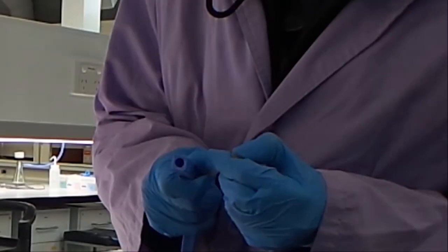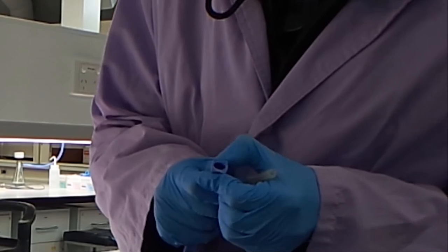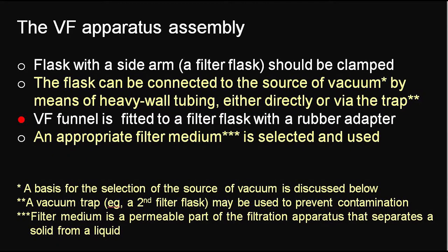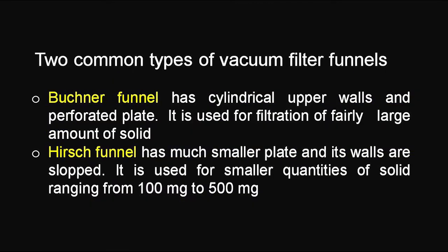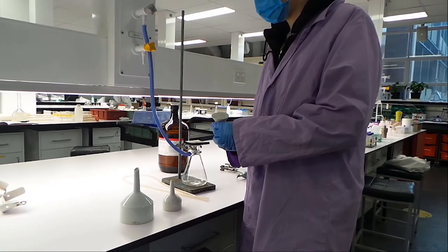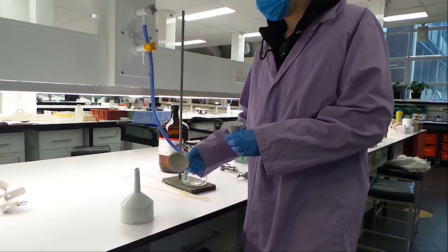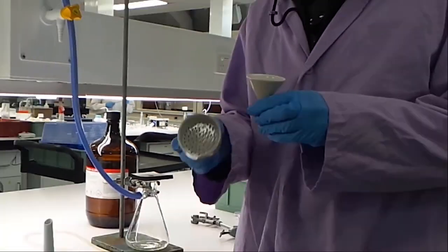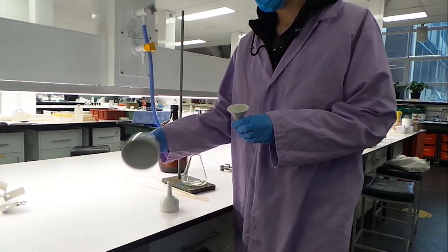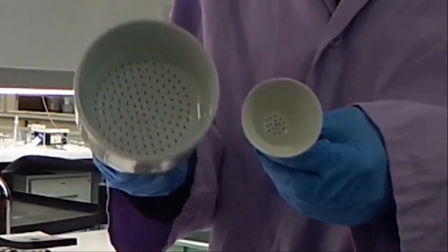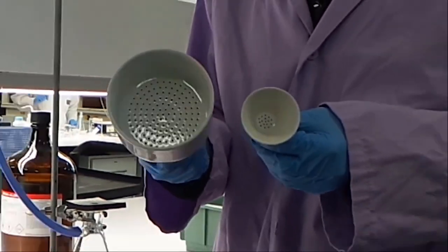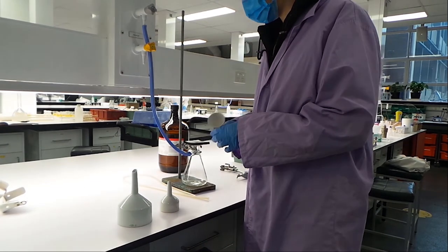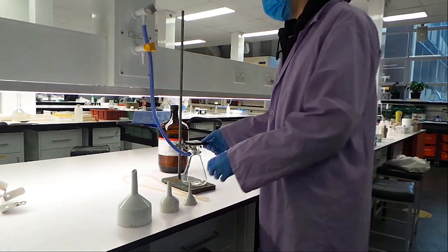The tubing used for the vacuum needs to have thick walls and be big enough to fit onto the flask. There are different types of filtration funnels: Buchner and Hirsch funnels. Buchner funnels are used for gathering a large amount of solid, whereas Hirsch funnels are used for small amounts. Which one you use depends on how much solid material you have.